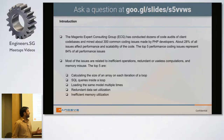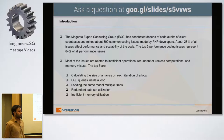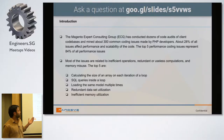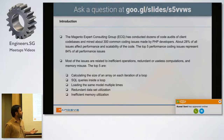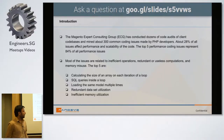The Magento Experts Consultancy Group, known as ECG, has conducted many code audits for their clients and found coding issues causing stores to take high loads. About 28% of the issues affected performance and scalability, and the top five performance coding issues represent 84% of all performing issues. Most of these issues are related to insufficient operations, redundant or useless computations, and memory misuse.